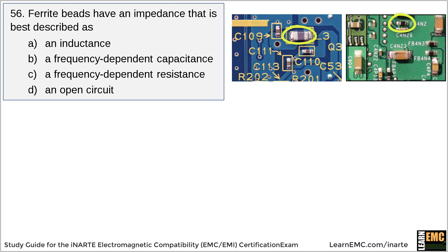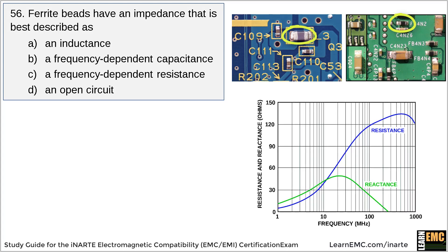The impedance of a ferrite bead consists of both a resistance and a reactance that are functions of frequency. Here's a plot showing the impedance of one particular ferrite bead. At some frequencies, the magnitude of the reactance may exceed the magnitude of the resistance, and the impedance could be viewed as that of a lossy inductor or a lossy capacitor. However, at the frequencies where the ferrite bead is designed to be most effective, its impedance is best described as a frequency-dependent resistance.